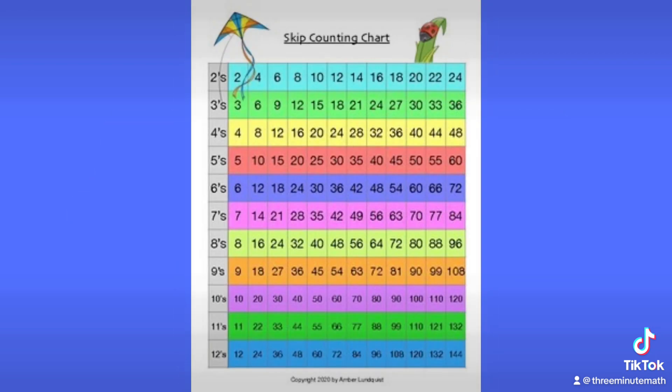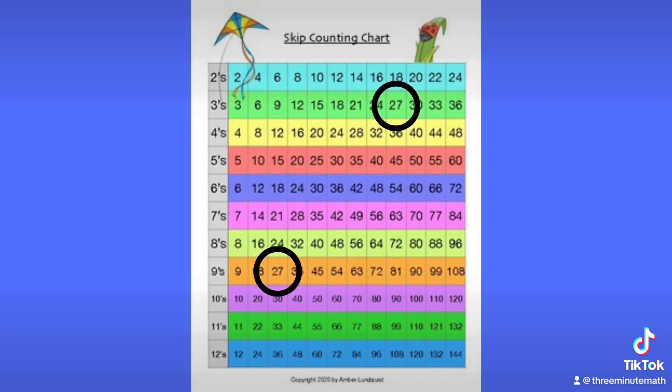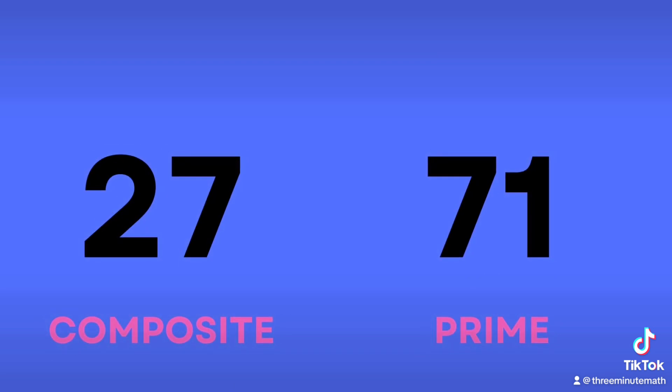Let's use a skip counting chart to illustrate this. Let's look at two numbers: 27 and 71. As you can see on our skip counting chart, 27 is a multiple of 3 and a multiple of 9, but 71 is not a multiple of any number. Therefore, 27 is composite, 71 is prime.